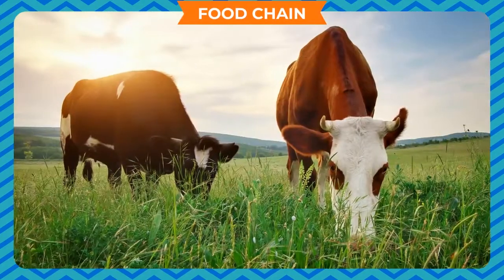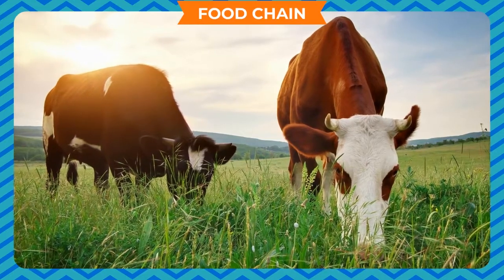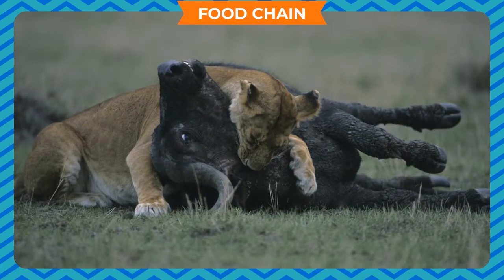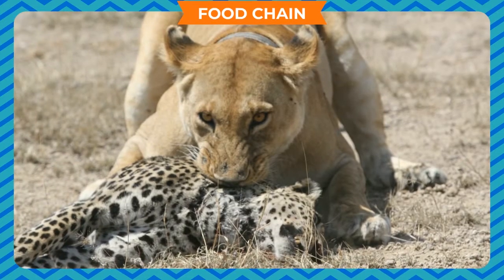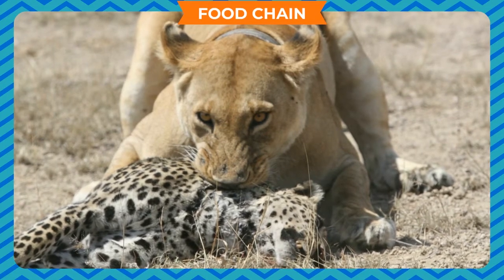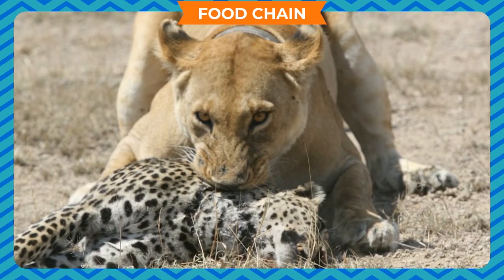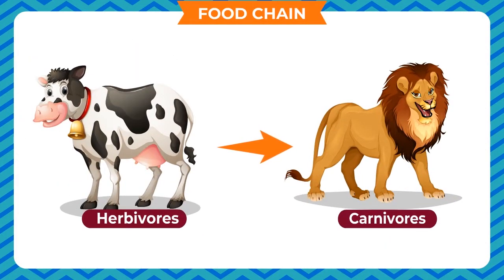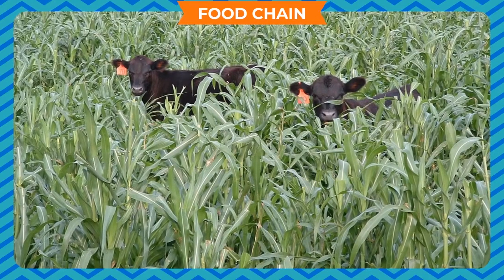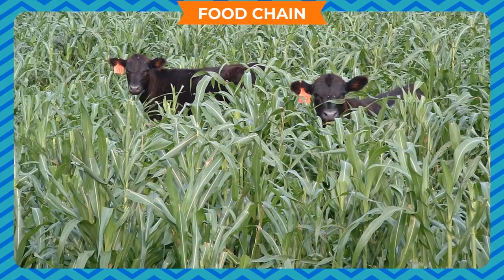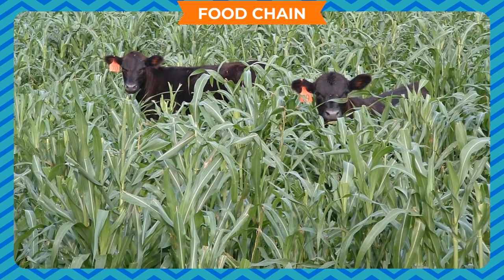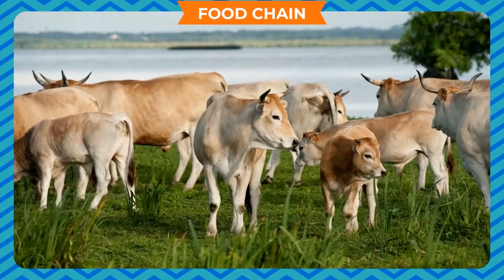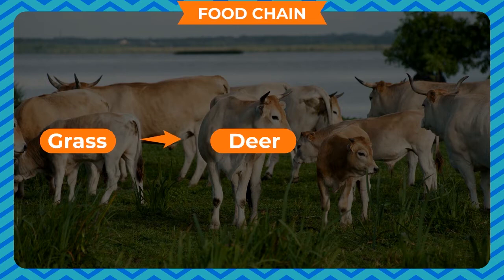Food chain: All animals depend on plants for food directly or indirectly. The producers are eaten up by the herbivores, who in turn are eaten up by carnivores, which may further be eaten up by other large carnivores. In this food chain, energy is transferred from plants to herbivores and from herbivores to carnivores. This process of food transfer from plants through a series of organisms with repeated eating and being eaten is called a food chain, indicating who eats whom. A typical food chain in a grassland is grass, deer, lion.